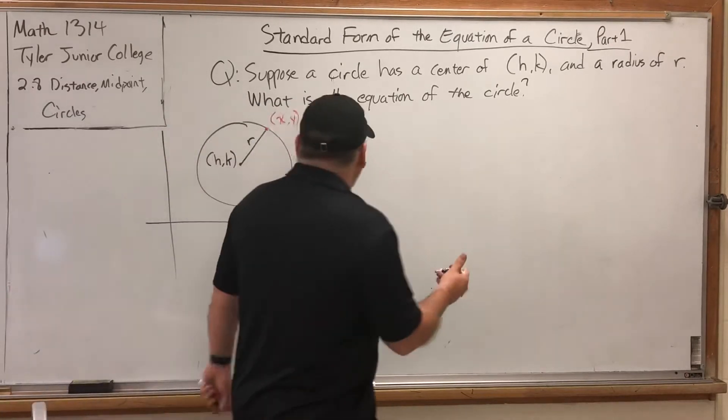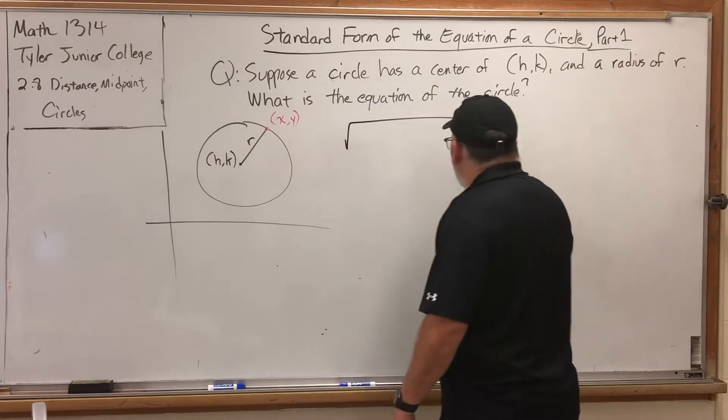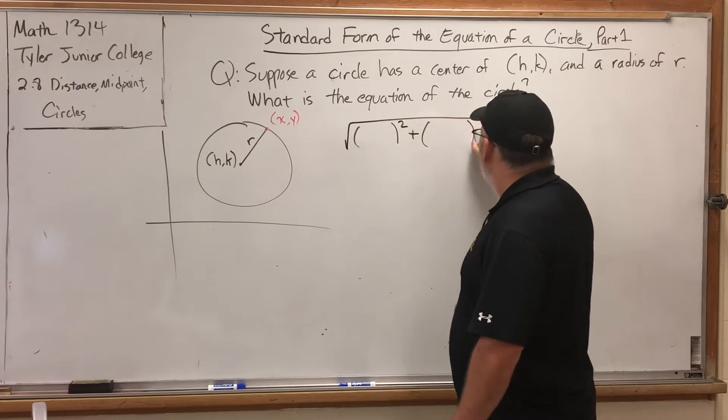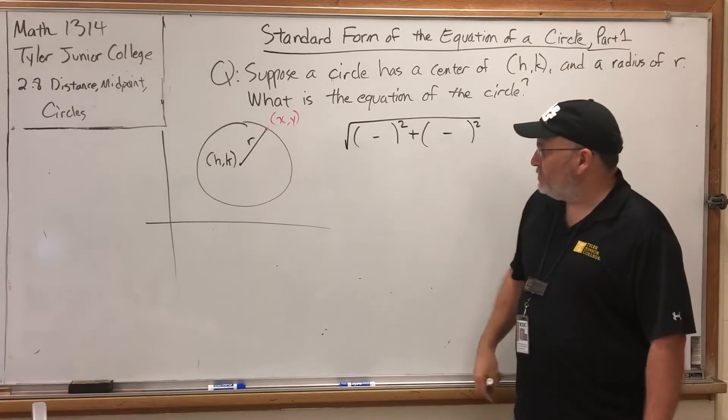The formula for distance is the square root of the sum of the squares of the differences in the x-coordinates and the y-coordinates.